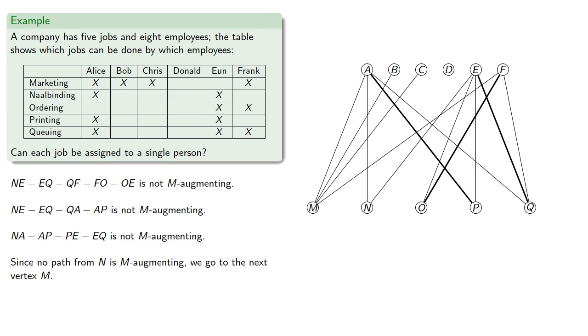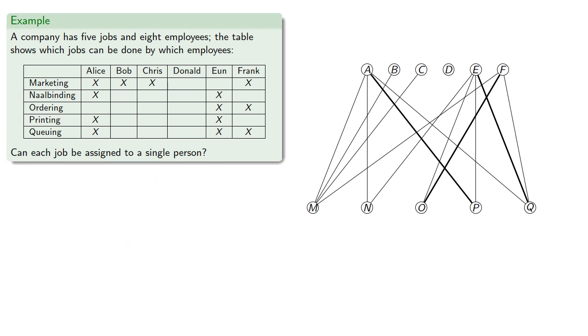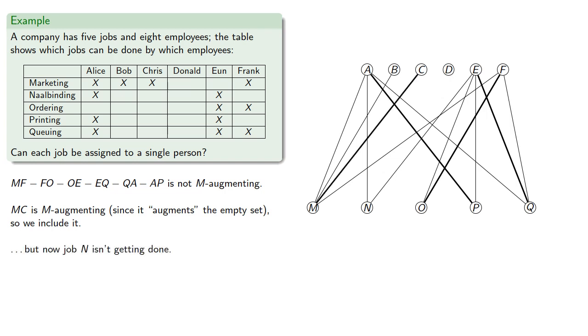Remember, we're looking at a depth-first search, so if we don't succeed, we just go on to the next thing. So if we start at vertex M and look for an M-augmenting path, we find... Nope. So MC is M-augmenting because it augments the empty set, and so we include it, but now job N isn't getting done.